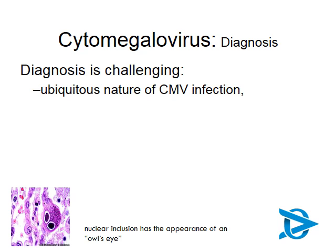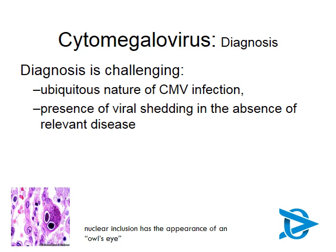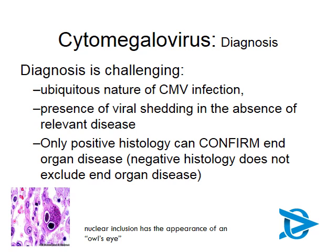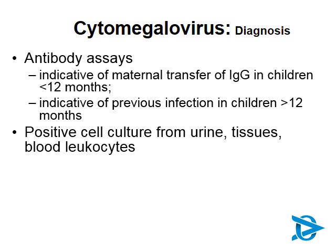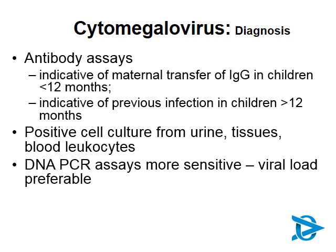The diagnosis of CMV is very challenging because of the ubiquitous nature of CMV infection — everyone has it. The presence of viral shedding in the absence of relevant disease is a complicating factor. Only positive histology can actually confirm end-organ disease, while negative histology does not exclude it. Antibody assays are not very useful at all, as most of us would have been infected from a young age. In children under a year old, you might be seeing maternal IgG. Positive cell cultures from urine, tissues, and blood leukocytes can be useful, but culturing is not easy and is expensive. The preferred test is a DNA PCR test and, if possible, a viral load.